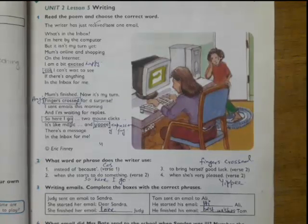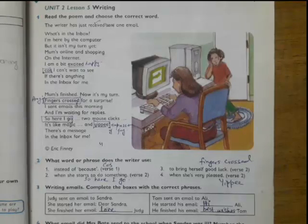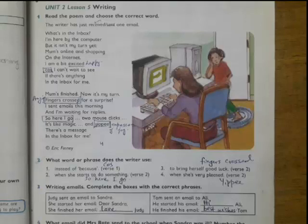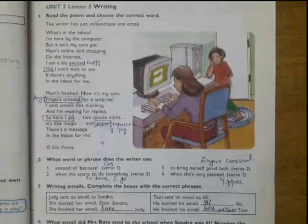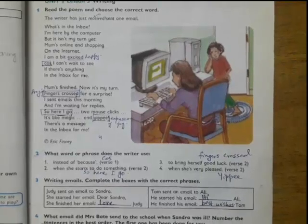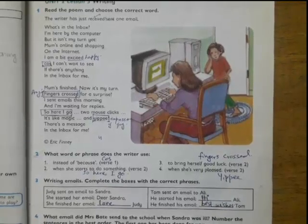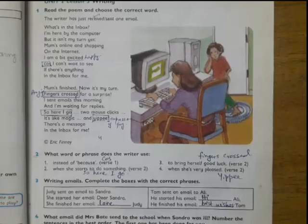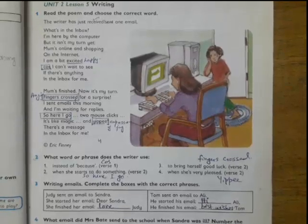Yippee! There's a message in the inbox for me. It is a small poem. The kid is quite anxious to get the answer of the email because he or she has done an email, but the mother is busy on the computer because she is purchasing something. But the kid is quite anxious. At the second stanza we can see that when he or she opened the inbox, there she got a reply.